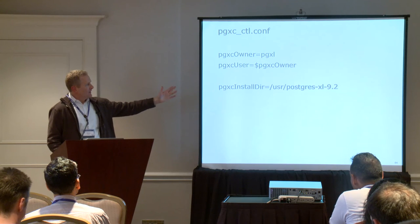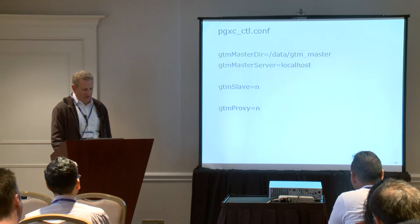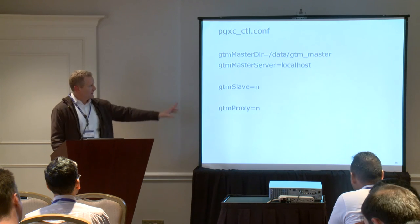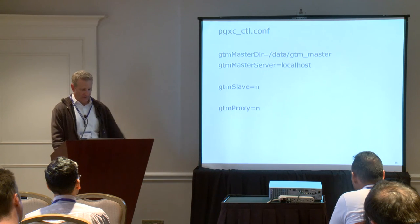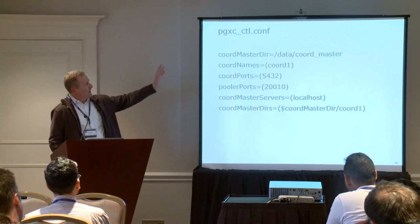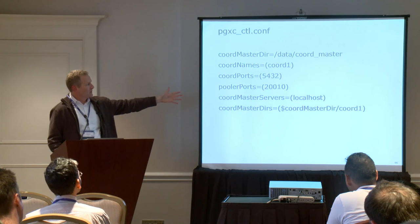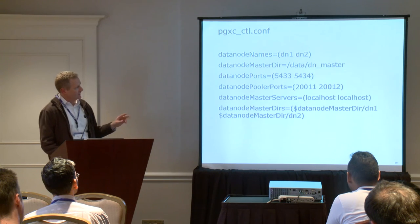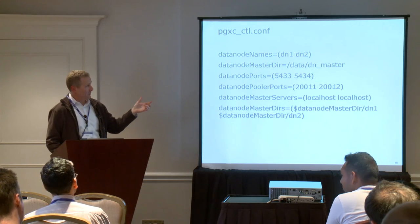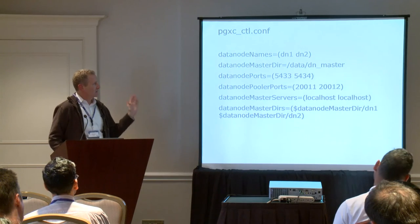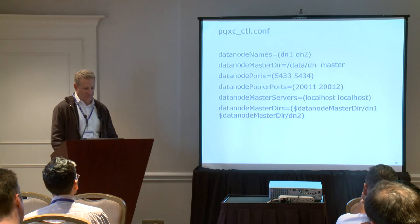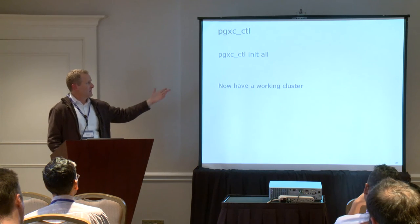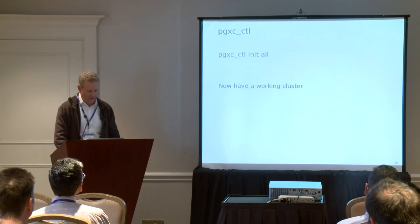Some of the basic settings: give it an owner and where XL is installed. You configure where GTM is — what the host is, data directory, whether it's the master or slave; in this case we just want the master. For a single coordinator, tell it the directory, give it a name, port, pooler port, and some WAL info. For data nodes, if we have two, we essentially have a list so you can list out the values for each. Once you've done all that, essentially all you have to do is run the command pgxc_ctl init all, and it will go off and initialize a cluster.